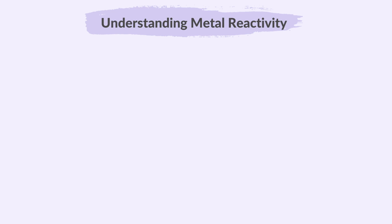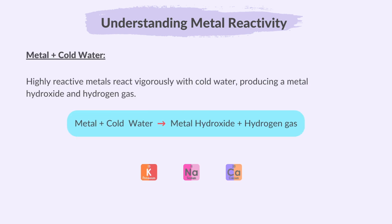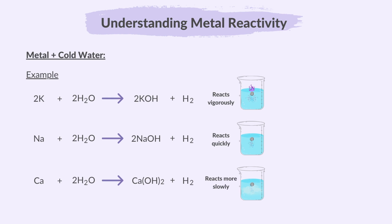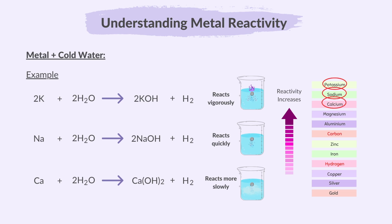Let's look at some reactions based on the metals and their position in the reactivity series. Highly reactive metals react vigorously with cold water, producing a metal hydroxide and hydrogen gas. Potassium reacts vigorously with cold water, producing potassium hydroxide and hydrogen gas, often igniting the hydrogen and creating a lilac flame. Sodium also reacts quickly with cold water, forming sodium hydroxide and hydrogen gas, but with less intensity. Calcium reacts more slowly with cold water, producing calcium hydroxide and hydrogen gas. Potassium, sodium and calcium are highly reactive metals, with potassium being the most reactive, and their reactivity with cold water increases as you move up the reactivity series.